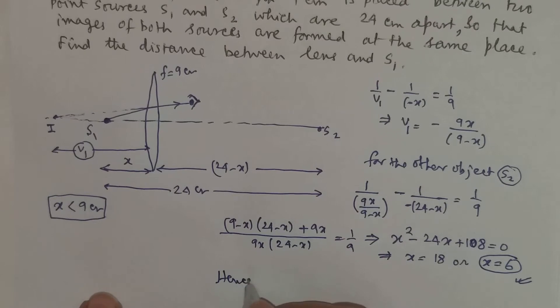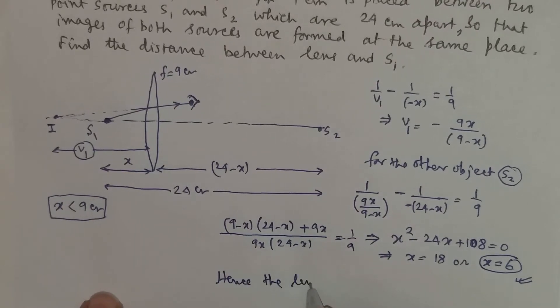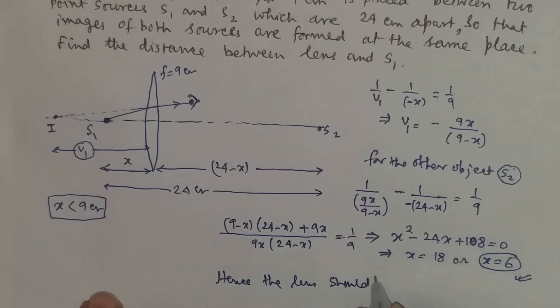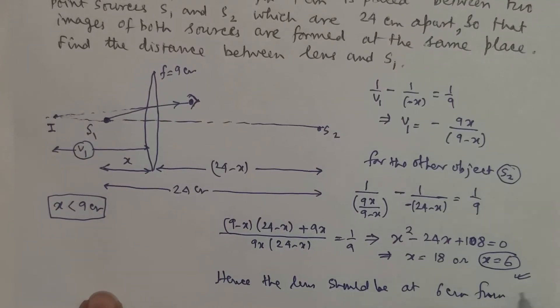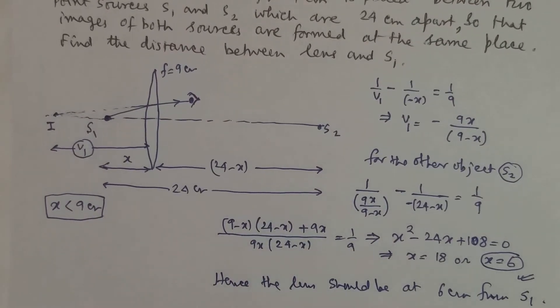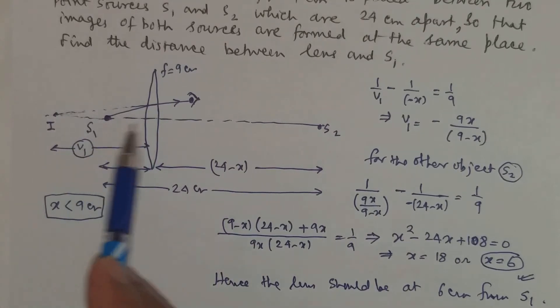Hence, the conclusion is the lens should be at 6 cm from S1 so that the images of both S1 and S2 coincide at the same point.